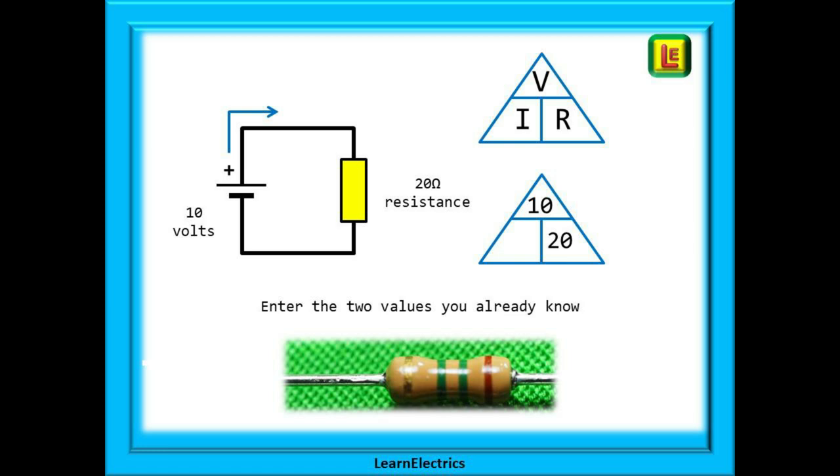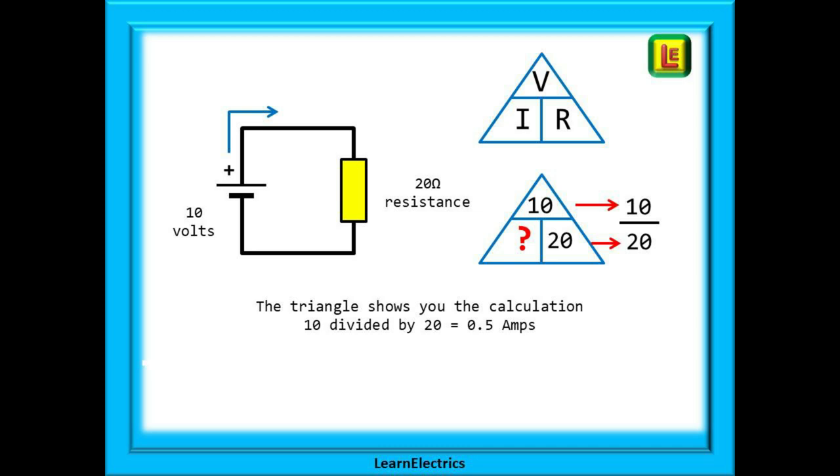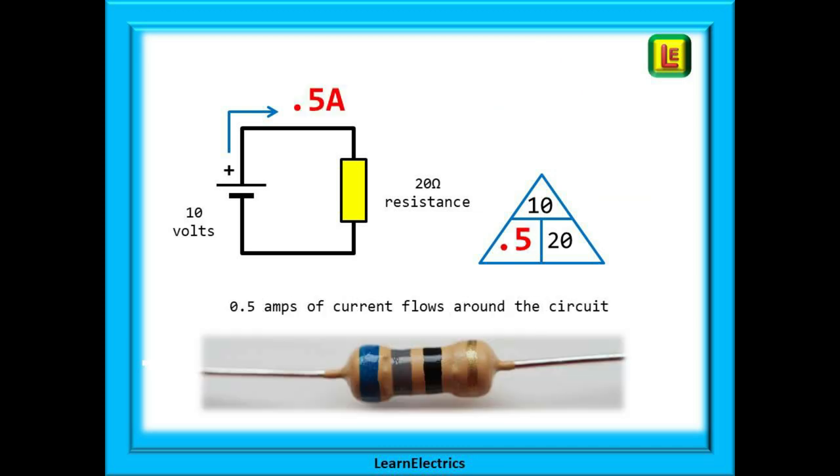And the empty box, the current, can now be found by calculation. Look at the triangle, it actually shows the calculation: 10 over 20. 10 divided by 20 which is 0.5 amps or half an amp, and that is our answer. 0.5 amps is flowing around the circuit. And how easy is that? And it doesn't get any harder.